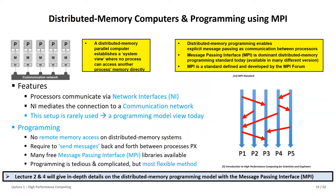Then you have distributed memory, which is really now talking about different processes where there's no way to access another process's memory directly — you always have to go through a communication network. You cannot just write and read memory; you always have to send messages. This will be a big part in our coming lectures and in your first assignment: learning what MPI is all about — send-receive, reduce, broadcast, collective operations. MPI is the de facto standard for programming distributed memory, covered extensively in Lectures 2 and 4.